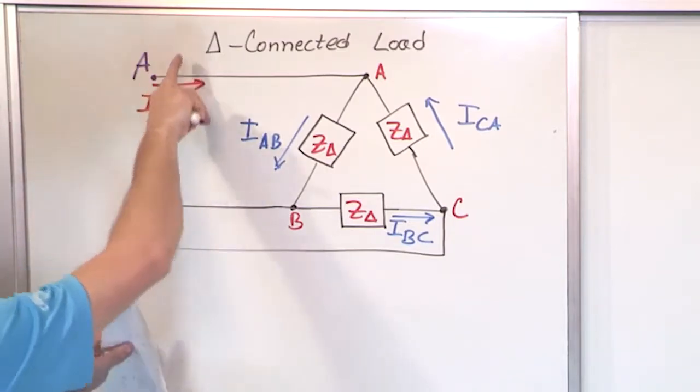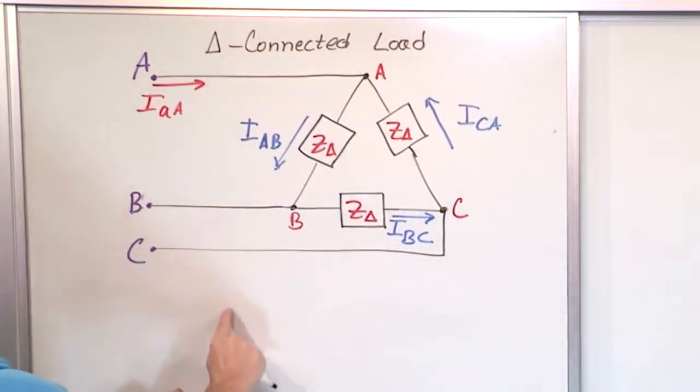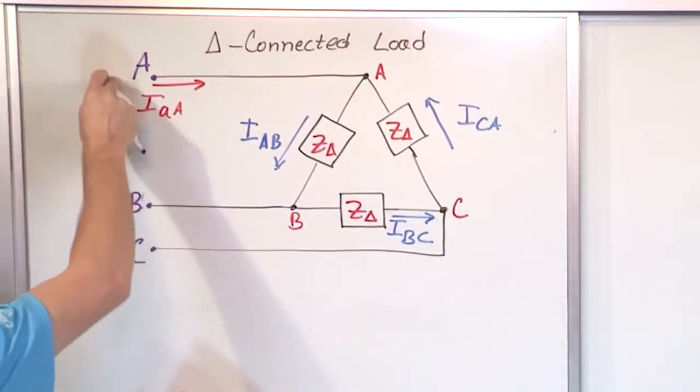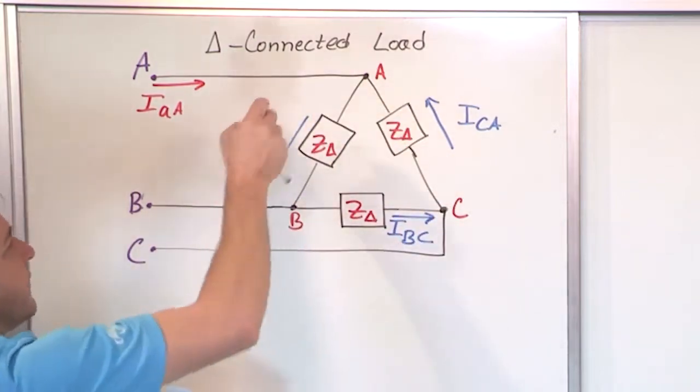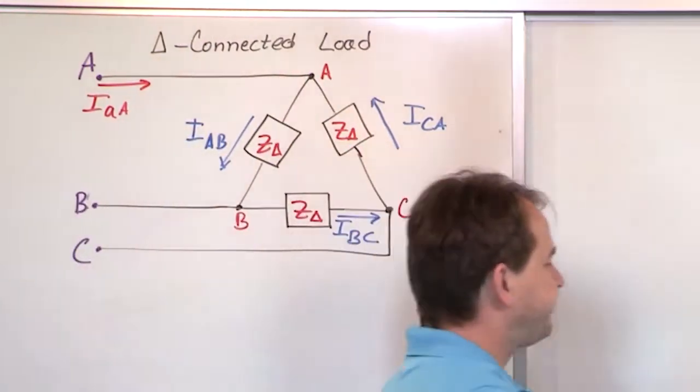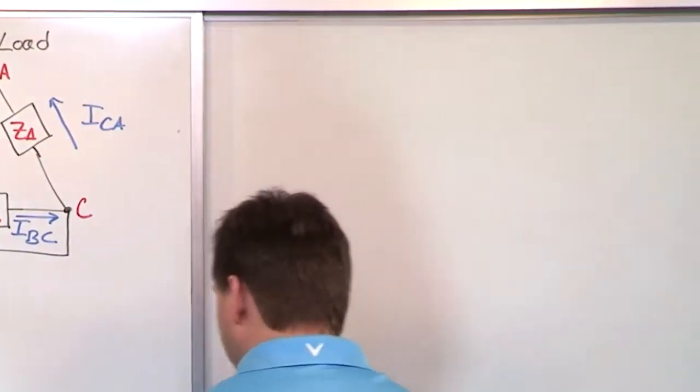looking into this as a black box, if you were to put a dotted line around this, you have three lines coming out, A, B, C, and inside here is some triangle arrangement of loads. And they're all balanced, meaning they're all the same.